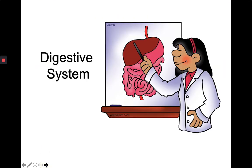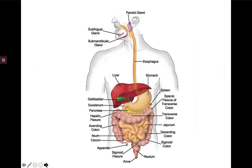The digestive system is shown here in this diagram and it's made up of a whole bunch of different organs. Some are the main organs where the food actually passes through, and some are the accessory organs that help digest the food as it passes through.